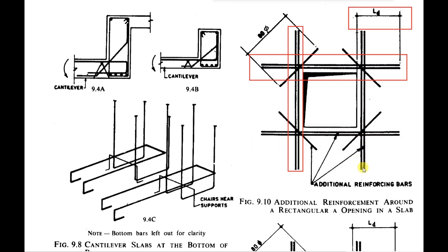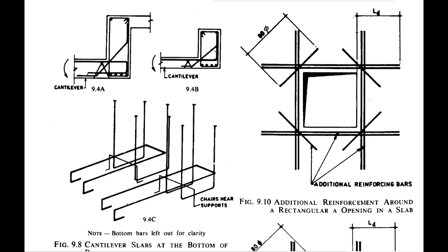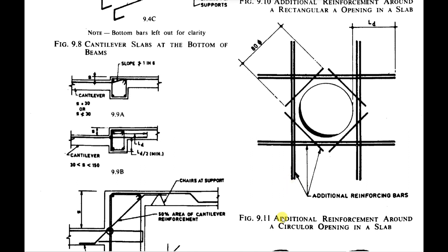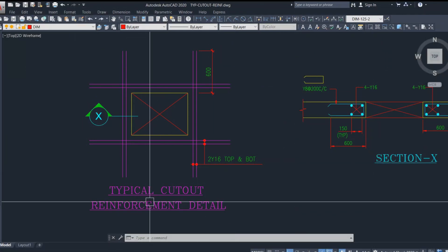The second condition states that diagonal stitching bars are put across the corners of rectangular holes. For circular openings, diagonal bars are placed to frame the opening. In addition, when we have large openings or when the thickness of the slab exceeds 150 mm, we need to provide diagonal bars, and the length of the diagonal bar should be 80 times the diameter. The diagram also shows the additional reinforcing bars for circular openings, with the additional bars extended up to the development length.